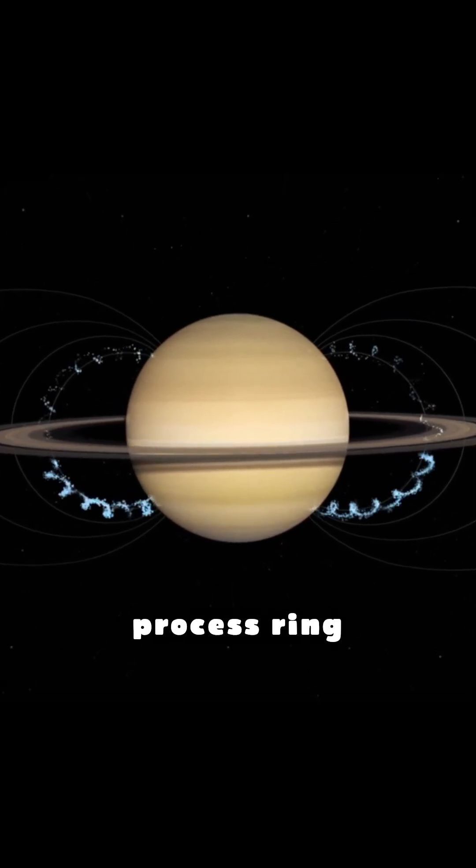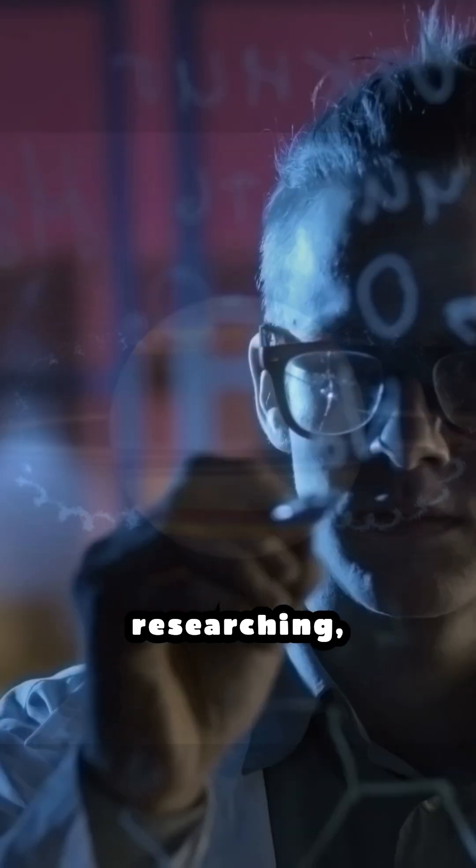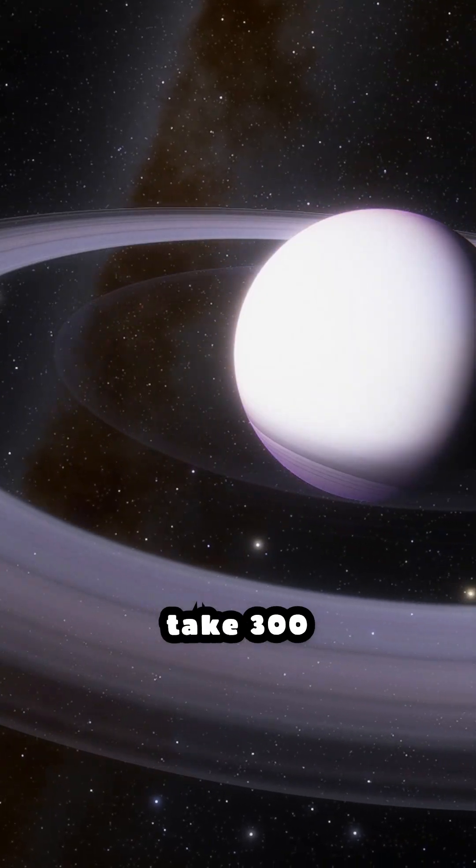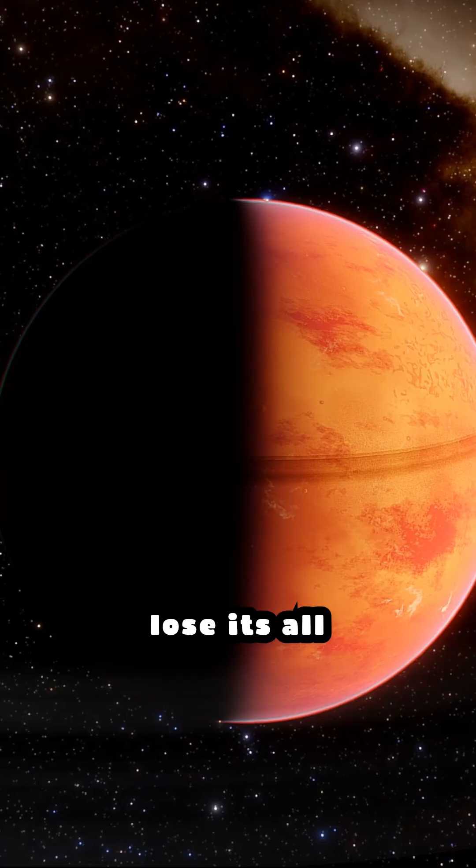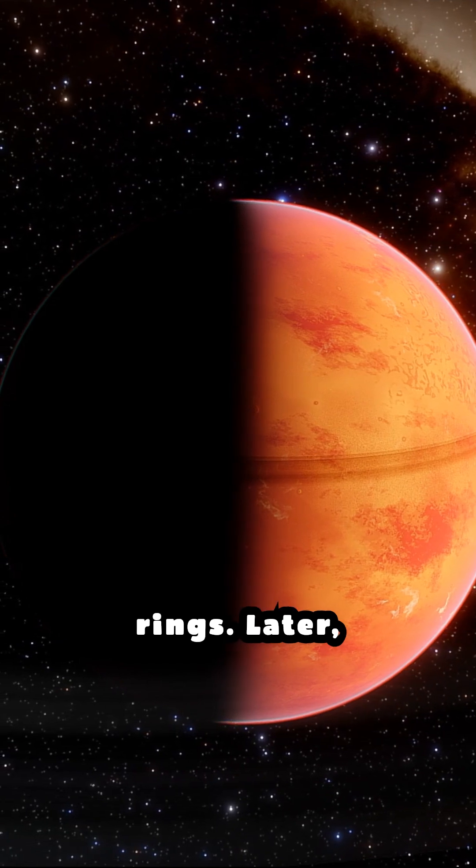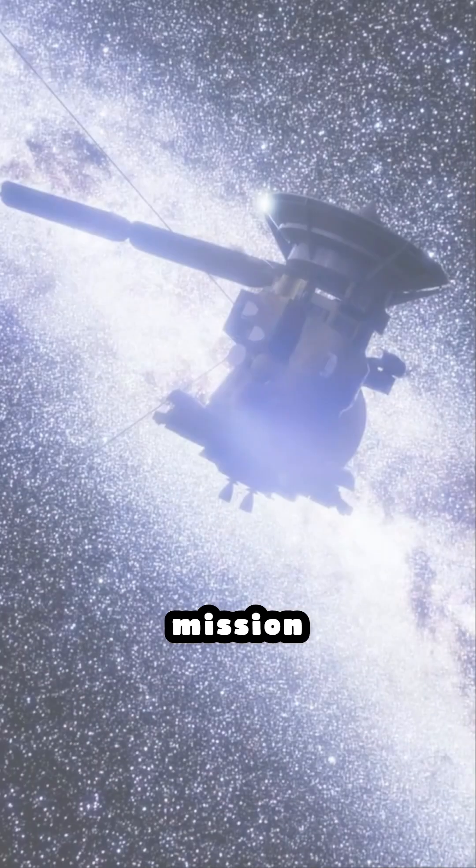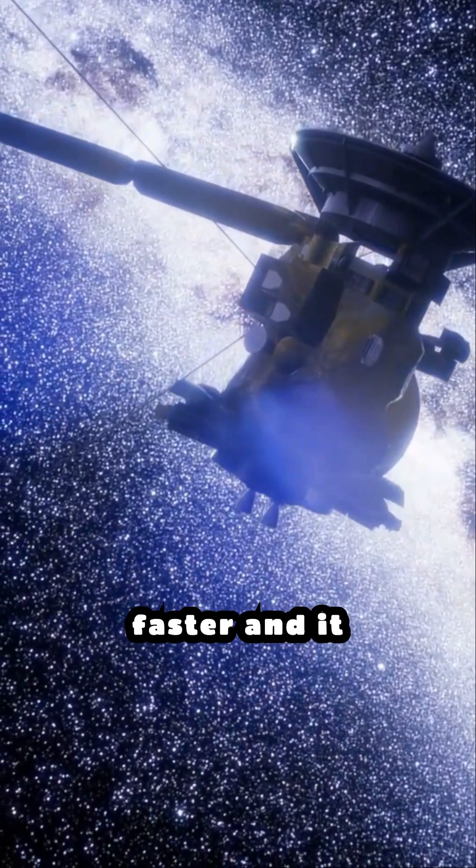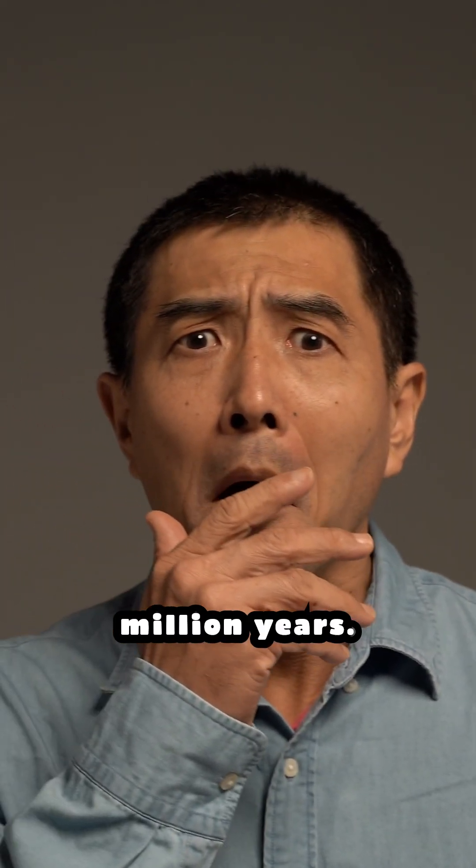Scientists call this process ring rain and by researching they calculated that it would take 300 million years for Saturn to lose all its rings. Later, Cassini mission confirmed it's happening three times faster and it could happen in just 100 million years.